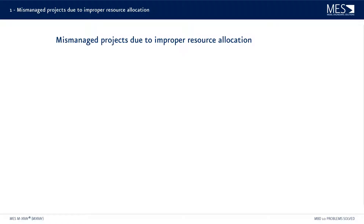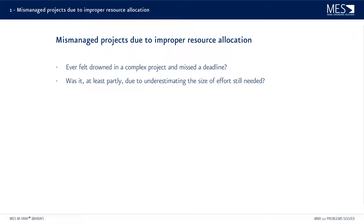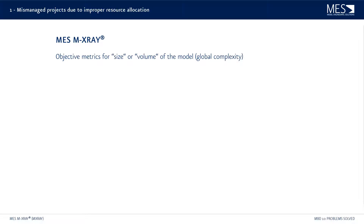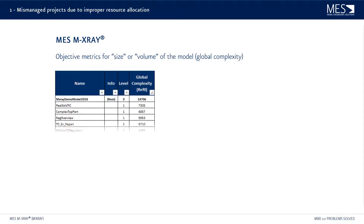Let's start with the first point: mismanaged projects due to improper resource allocations. Have you ever felt drowned in a complex project and maybe even missed a deadline? If so, was it at least partly due to underestimating the size of the effort still needed? MES has a tool that can assist with these challenges. MES MX-Ray can provide objective metrics that can actually evaluate the size or the volume of your model. We call it global complexity.